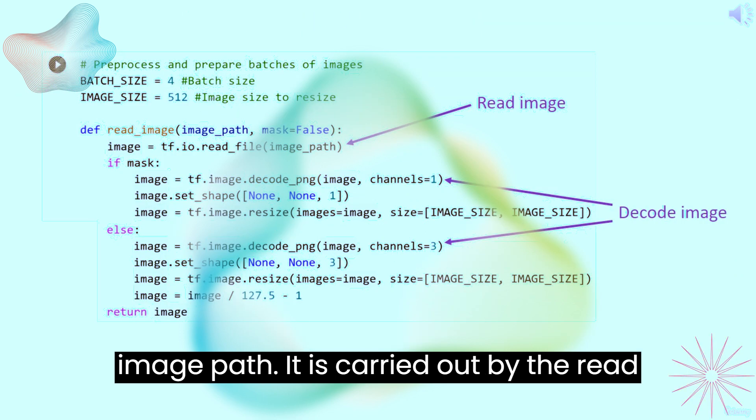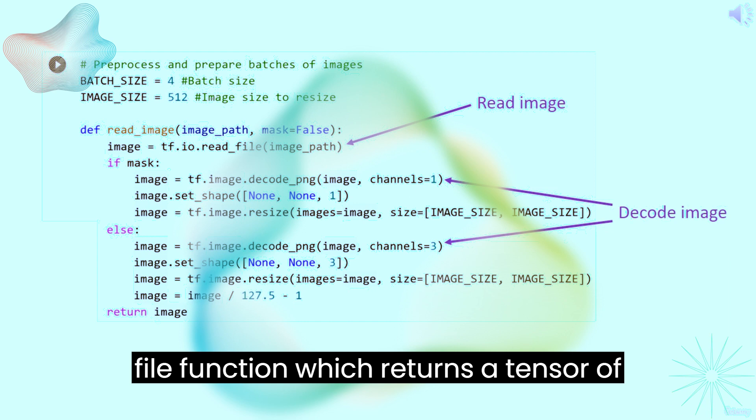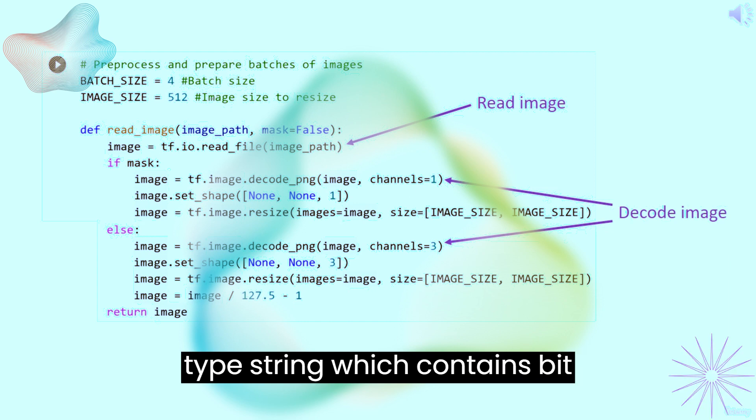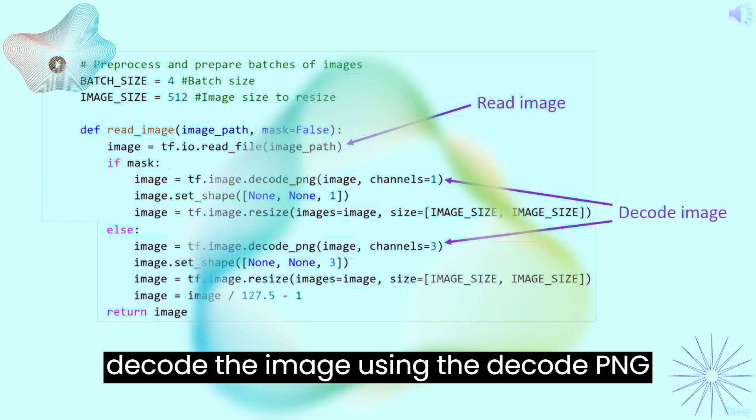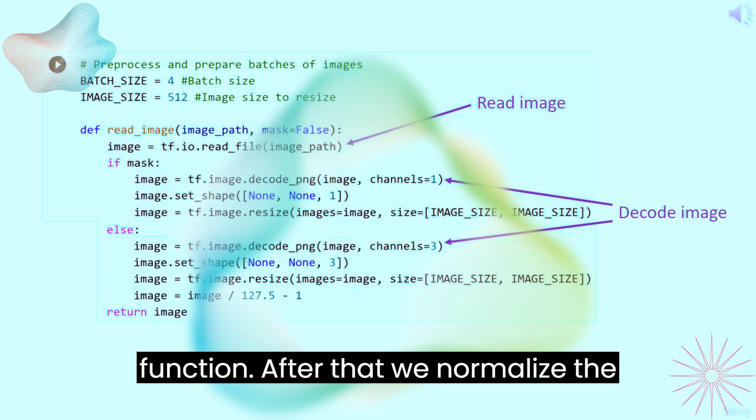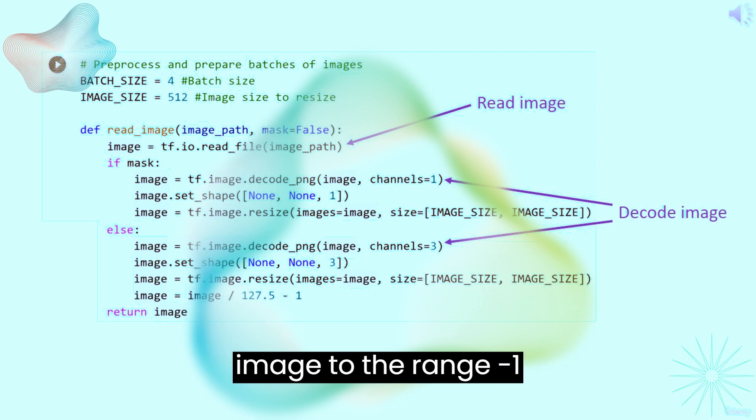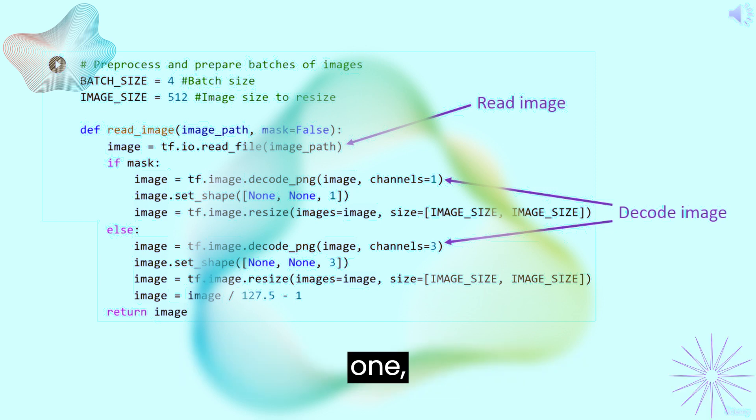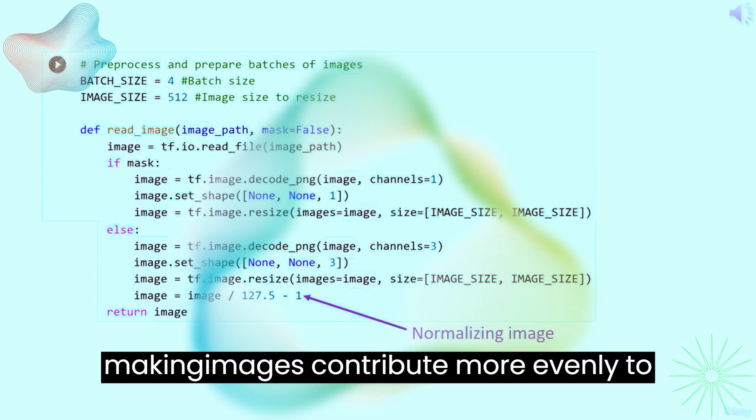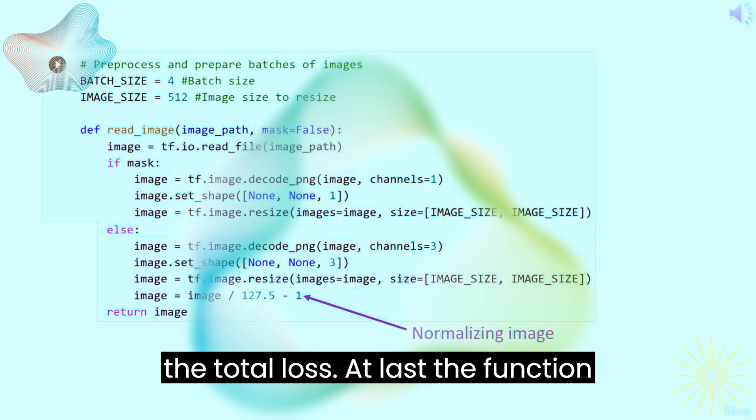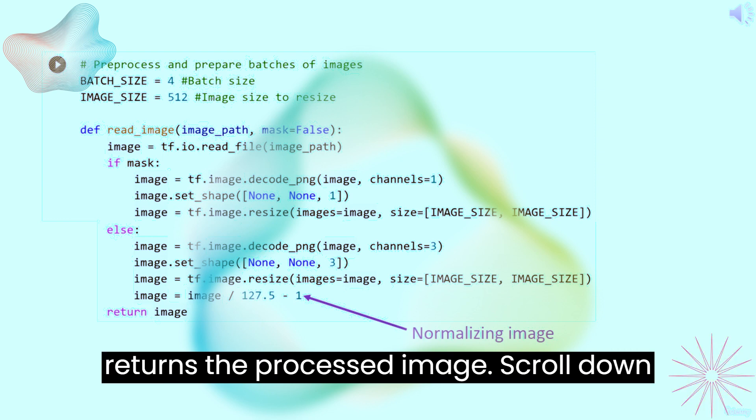It is carried out by the readFile function, which returns a tensor of type string which contains bit representations of the image. Then we decode the image using the decode_png function. After that, we normalize the image to the range minus 1 to plus 1. Every pixel color is adjusted to minus 1 and plus 1, making images contribute more evenly to the total loss. At last, the function returns the processed image.